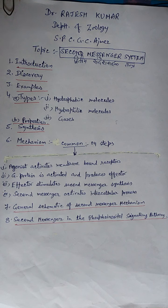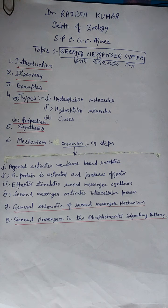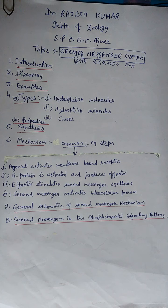Properties of secondary messenger molecules: these intracellular messengers have some properties in common. First, they can be synthesized or released and broken down again in specific reactions by enzymes or ion channels. Second, calcium ions can be stored in special organelles and quickly released when needed. Third, their production, release, and destruction can be localized, enabling the cell to limit the space and time of signal activity.